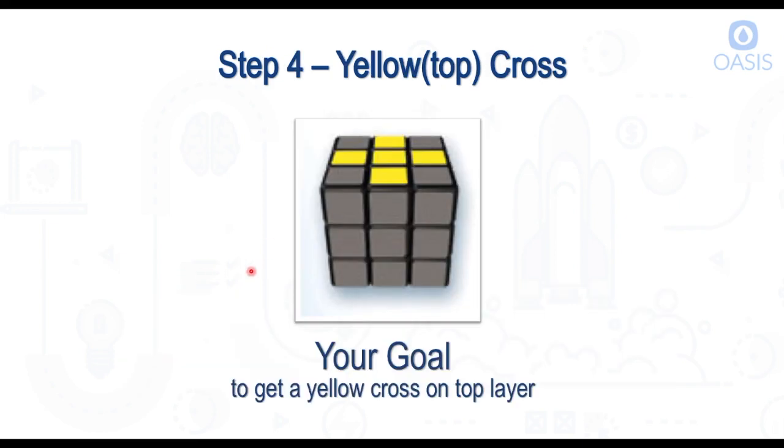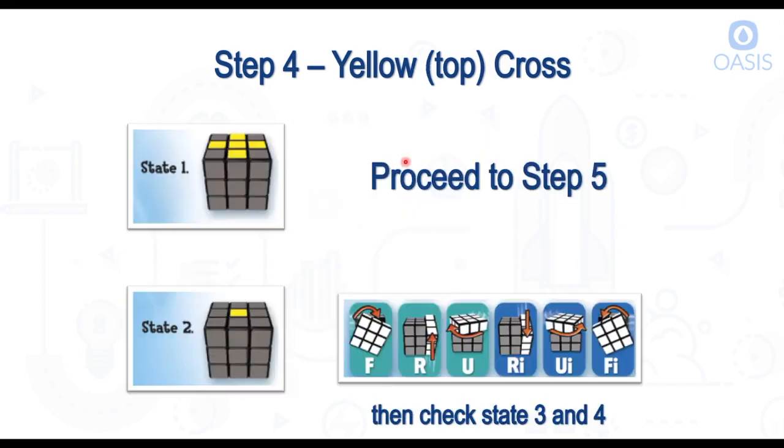Next we want to get the yellow cross on the top. The yellow cross is pretty easy - it's only one algorithm to remember. You just need to know when to deploy that algorithm and for how many times. This assumes that the bottom two layers are already solved. If we look at the top of our cube and we see a yellow cross already there, then we don't need to do this algorithm. You just proceed to step five. This is all in the solving handout from the first session.